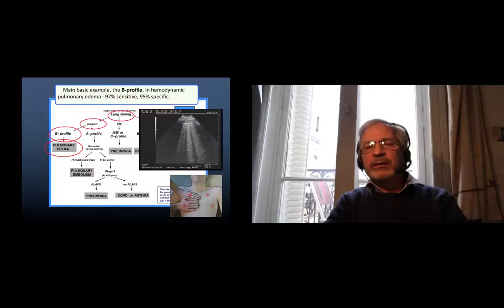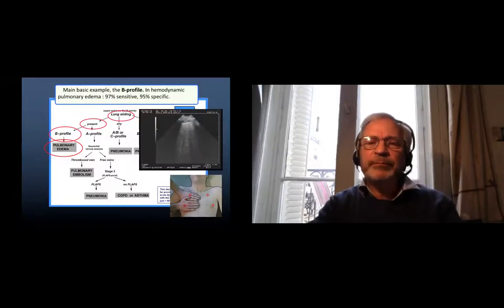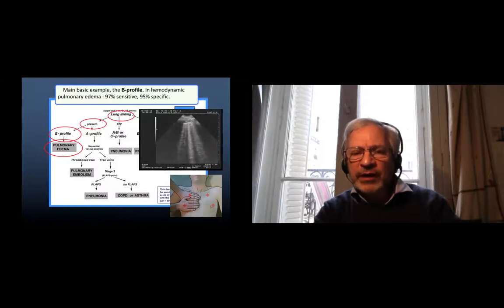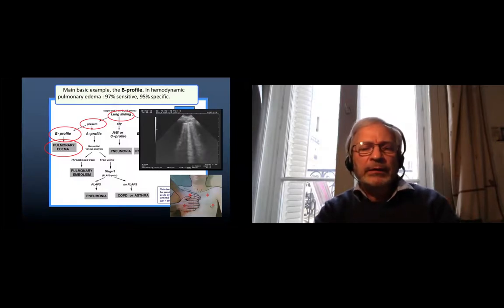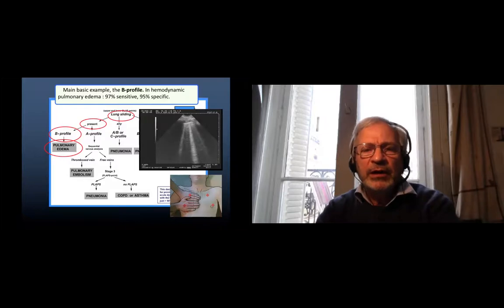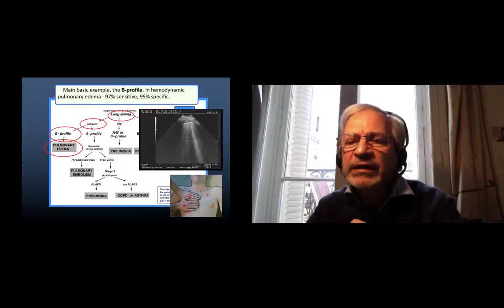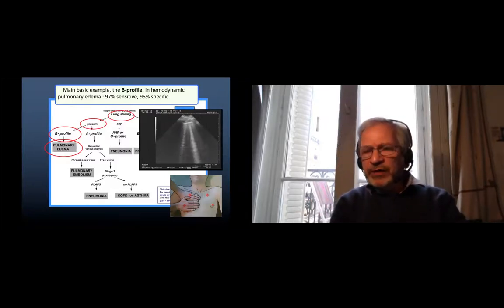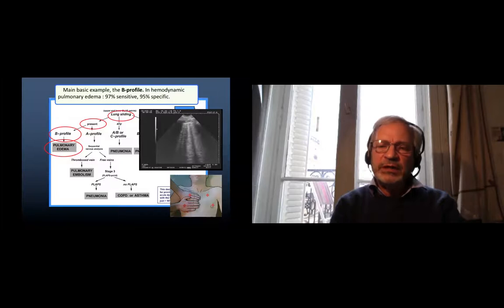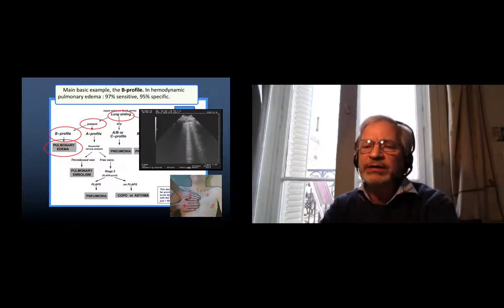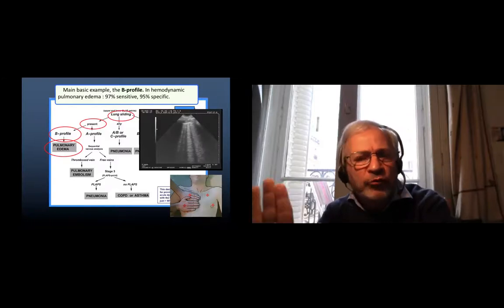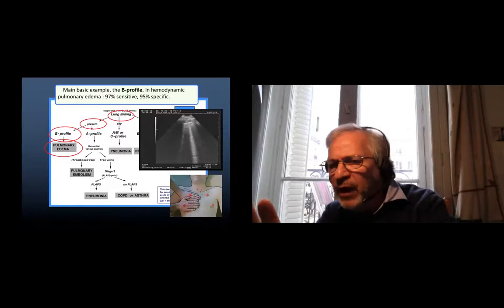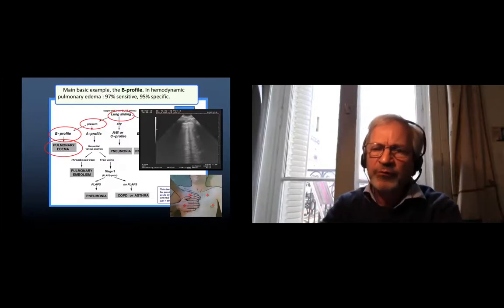The B profile: is lung sliding present at the four anterior points that we will see a bit later, associated with lung sliding? And we are obliged to add I don't see any anterior consolidation. This is the B profile. It is 97% sensitive, 95% specific to hemodynamic pulmonary edema. I can see here more than two, for sure maybe four, maybe five B-lines moving at the four anterior points.